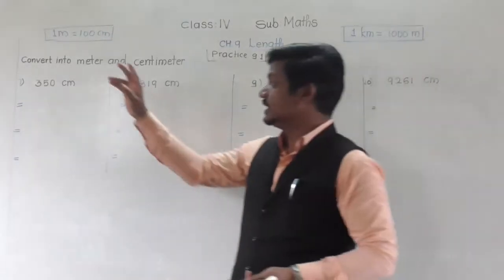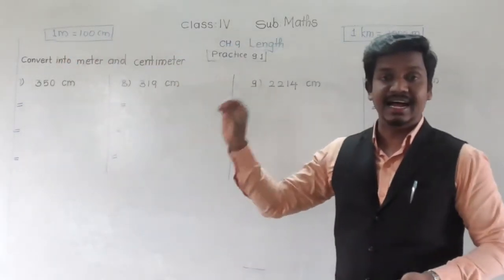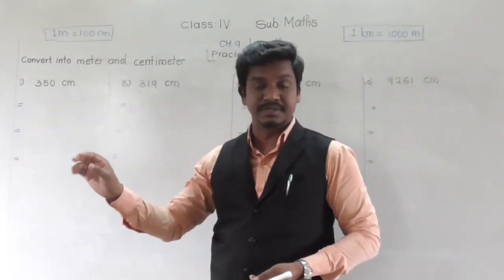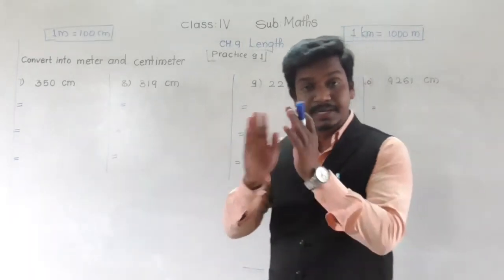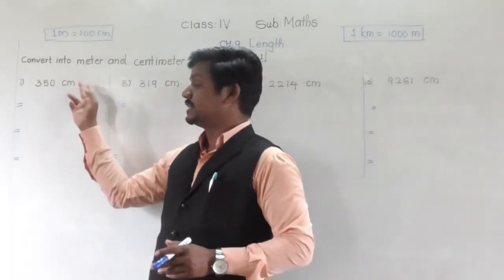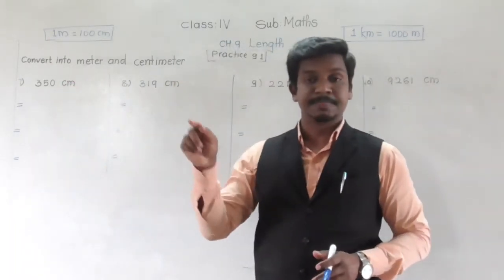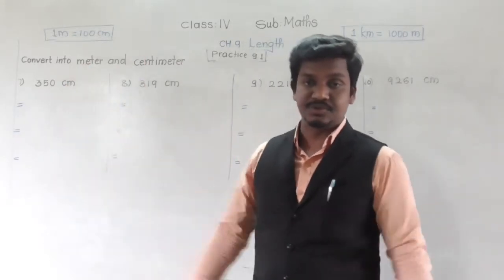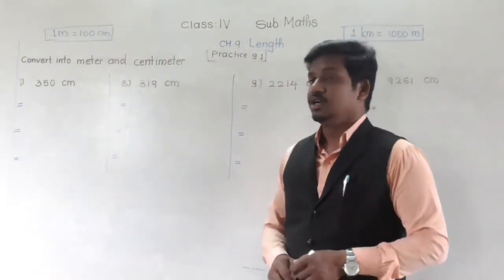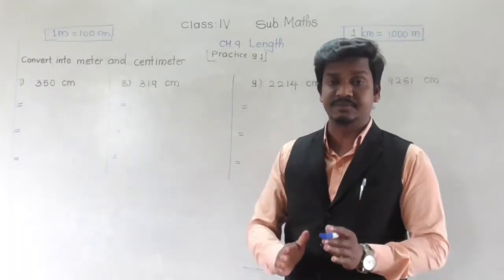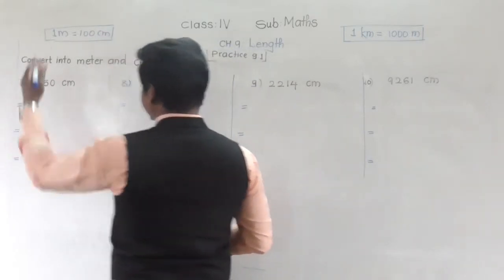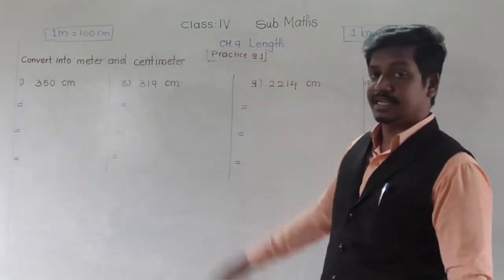The next question is: convert into meters and centimeters. If you observe, these lengths are given completely in centimeters, and we have to split them into meters and centimeters. In 350 centimeters, what is the complete meter part — that we write separately — and the remaining centimeters we write separately. Pay attention very carefully as we solve the first example. This is the seventh example in practice 9.1.